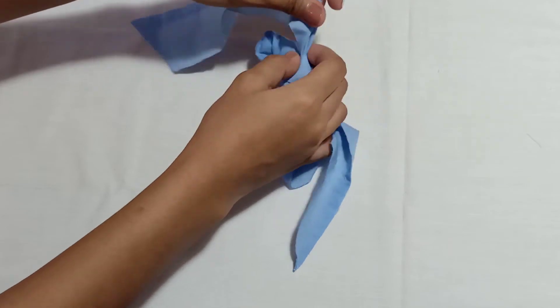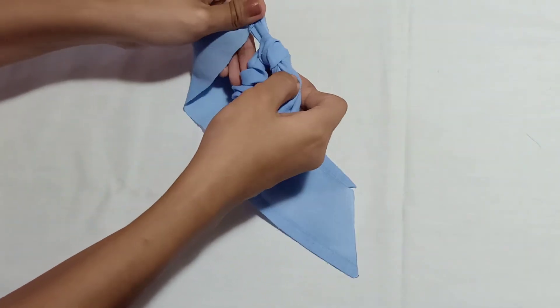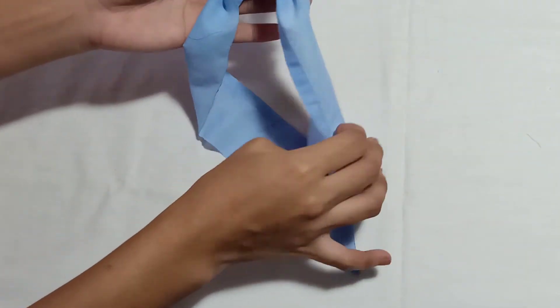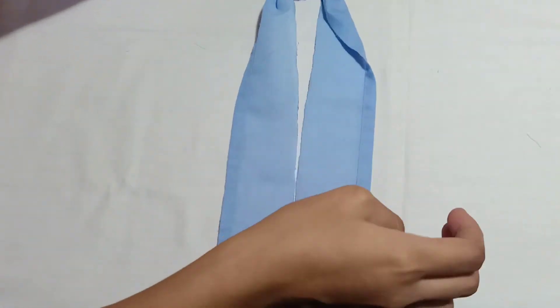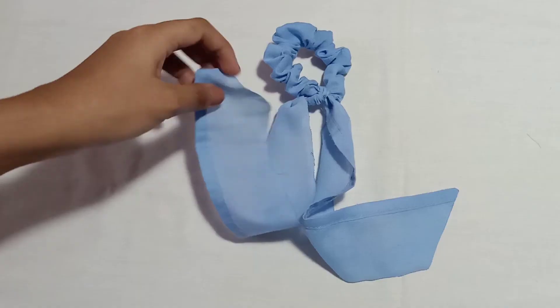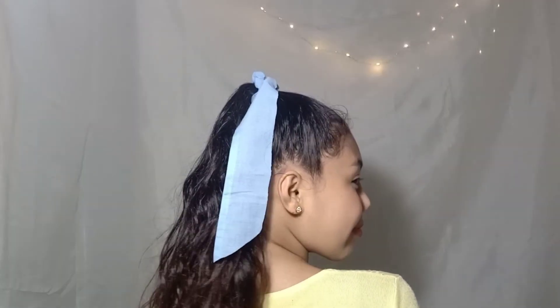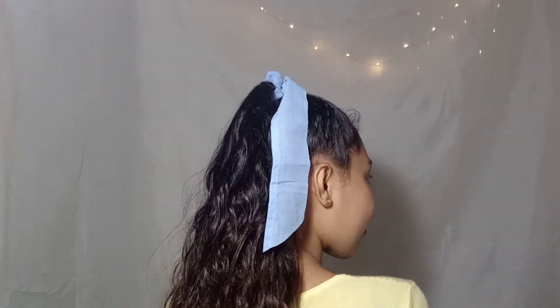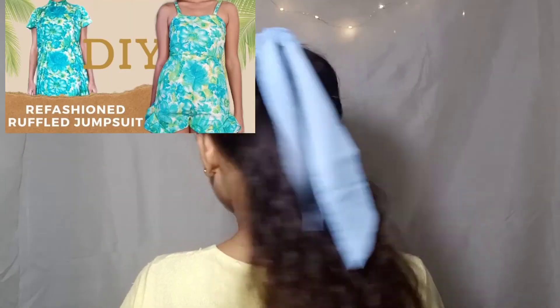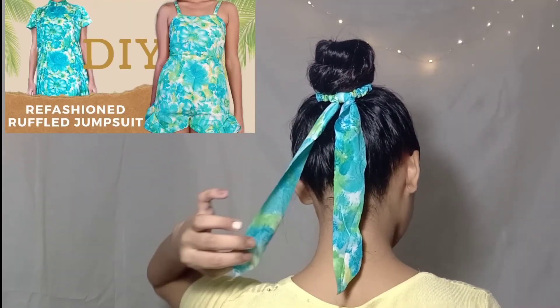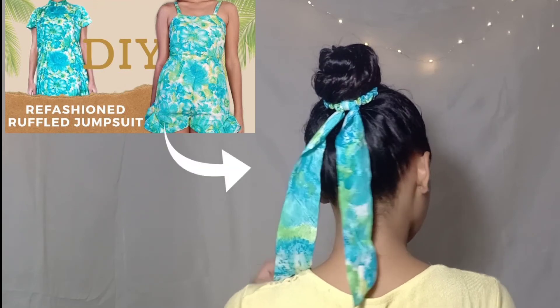After making the strip of fabric that will serve as the ribbon, I just tied it to our scrunchie. Here is the final outcome of our DIY. I also made one with other design fabric from the jumpsuit DIY, so check that out also.